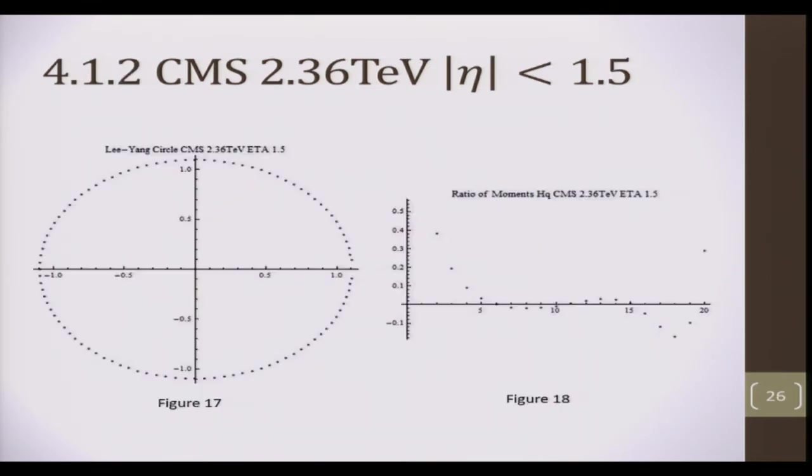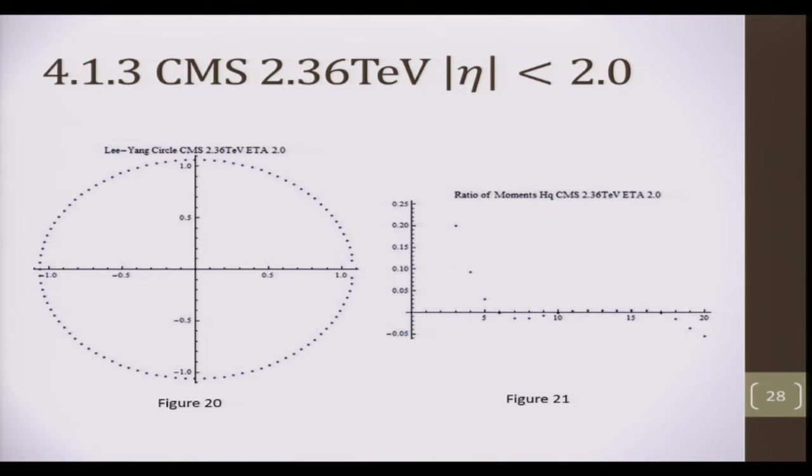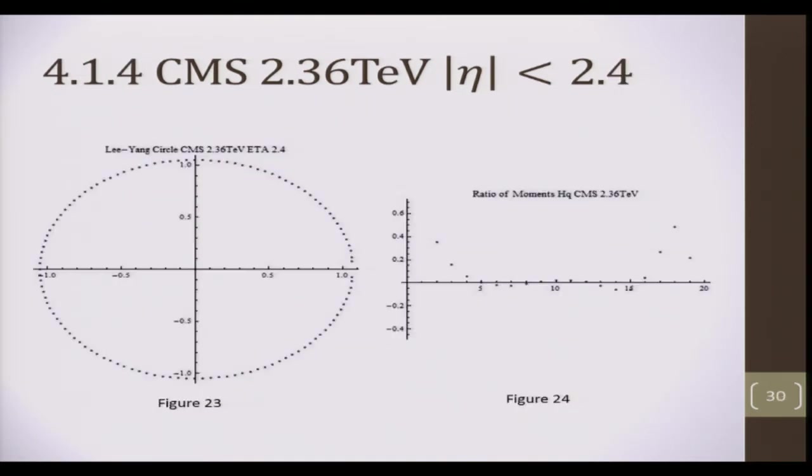Now, if you look at the next eta cut, it appears the ear structure has disappeared. It's no longer obvious. At subsequently larger eta cuts of 2.0, and the largest eta cut of 2.4, the ear structure is no longer noticeable.